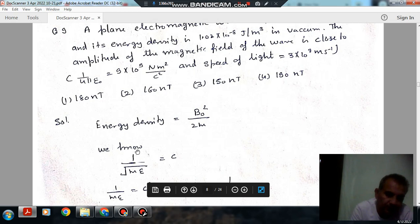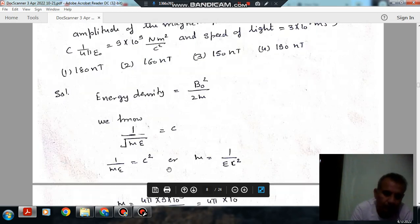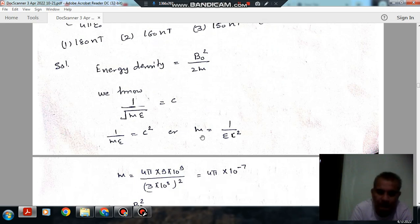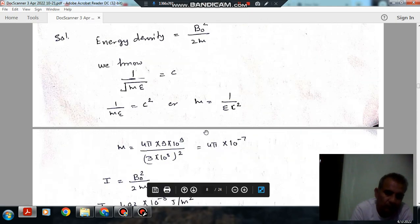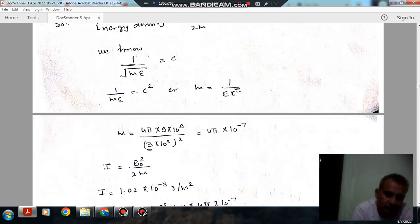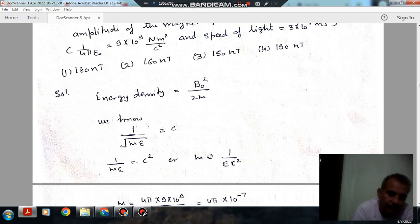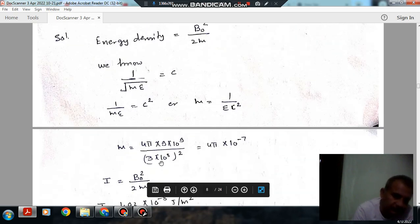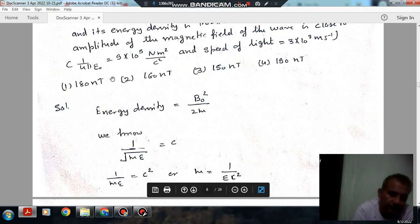And also the speed is given by 1 by root mu epsilon. So 1 by mu epsilon will be c squared, mu will be 1 by epsilon c squared. So mu as 1 by 4 pi epsilon is given as 9 times 10^9, so we can find out epsilon as 4 pi into 10^-9. So mu will be 4 pi times 10^-9.